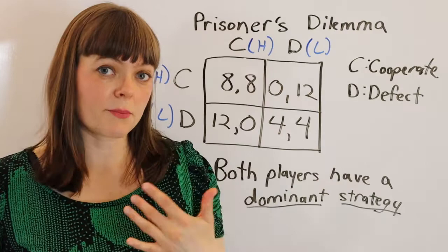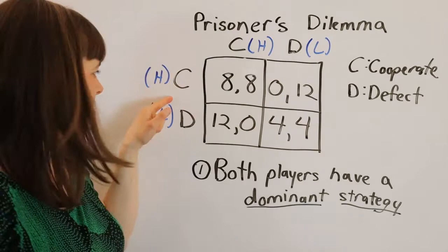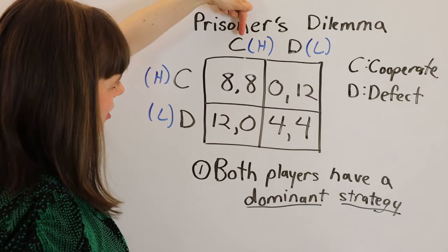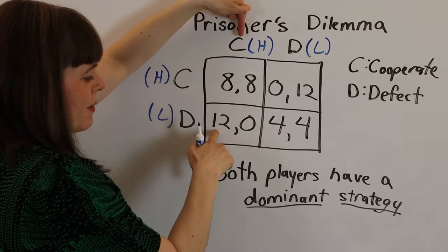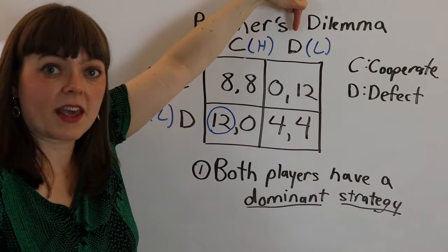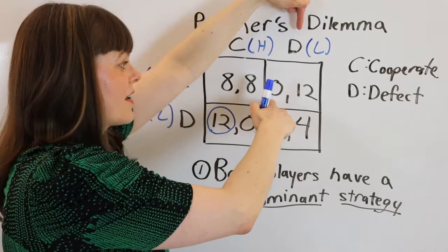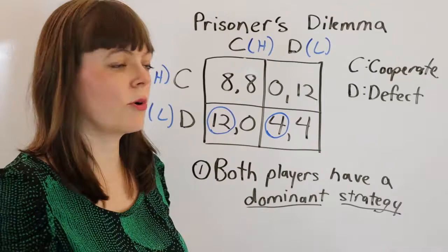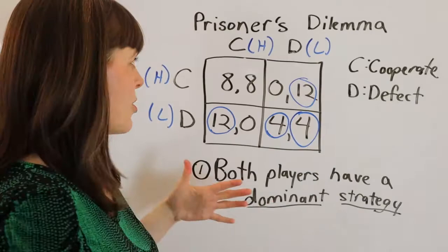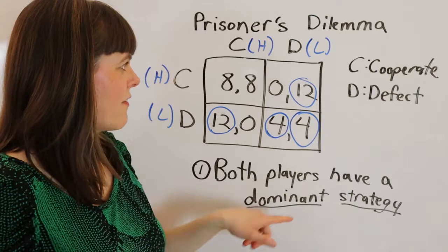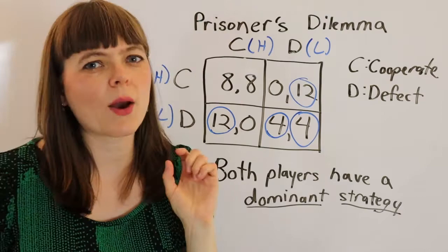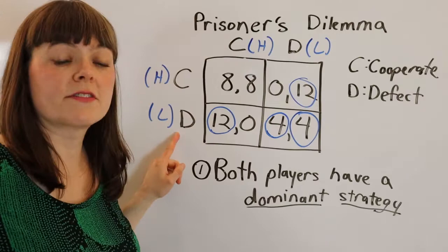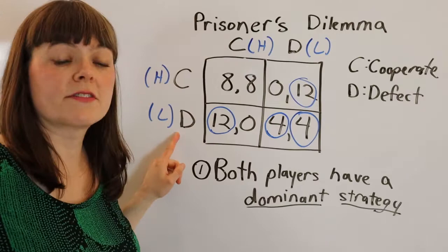This is a prisoner's dilemma. We figure out the dominant strategy from firm one's perspective: if the other firm sets their price high, I'd rather get the whole market by setting my price low. If the other firm sets their price low, I'd prefer to set my price low too and split the market rather than get nothing. The answer is always the same — you always wish you had set your price low. So the dominant strategy is low price: it's always the best response no matter what the other firm chooses.